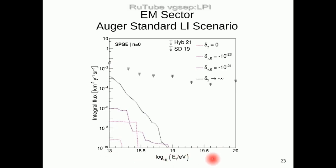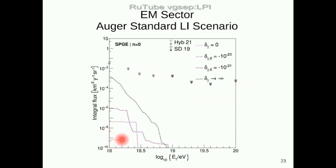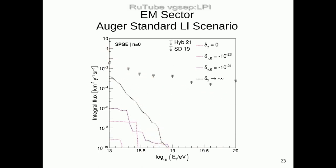Using these two scenarios we set limits on the Lorentz invariance coefficients. This plot shows the integral of the flux as a function of energy. The Auger Observatory has never identified one photon, so you only have upper limits on the photon flux. The simulation starting from the Lorentz invariant case shows very few photons arriving; as you increase the break, more photons arrive. But even in the extreme case where photons would not pair-produce at all, we predict a flux much lower than the upper limits, so we cannot set any limit on delta under this scenario.